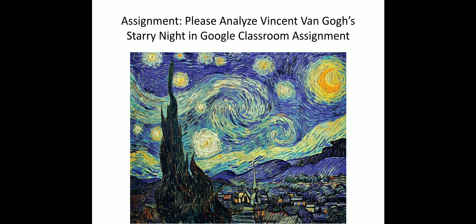For the activity for today, in Google Classroom I will have the picture of Van Gogh's Starry Night. Most people are pretty familiar with this composition — you see it anywhere from posters to t-shirts to coffee cups. What I would like you to do is to do an analysis of this painting. How are the art elements working? How are the principles of design working? So look for this in Google.